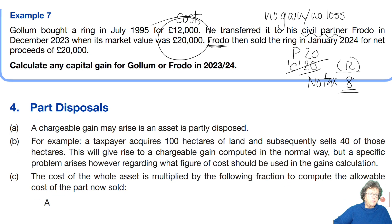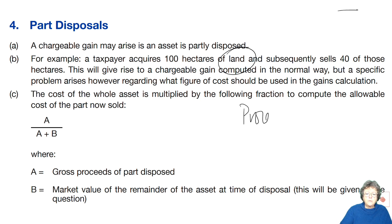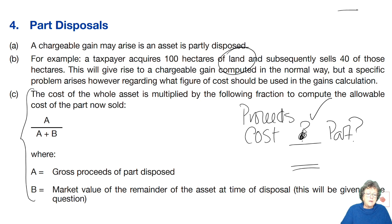Next, part disposals. Part disposals — normally dealing with land — are where you sell part of an asset. It gives rise to a chargeable gain in the normal way. You know the proceeds because you sold part of the land, but what's the cost? Since you've only sold part of it, how do you know which portion of the cost to include? The rule is: the cost of the whole asset is multiplied by A over A plus B to compute the allowable cost of the part sold, where A is the gross proceeds of the part disposed of and B is the market value of what remains at the time.